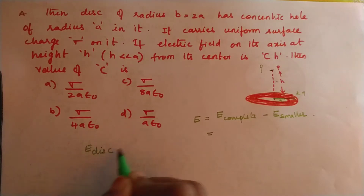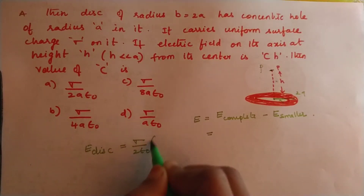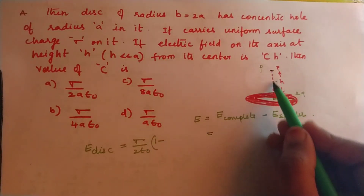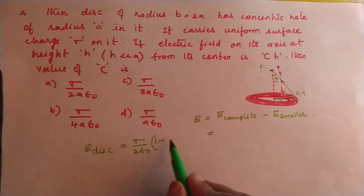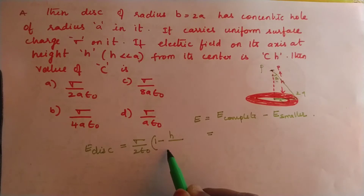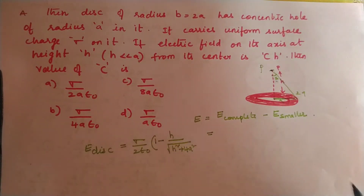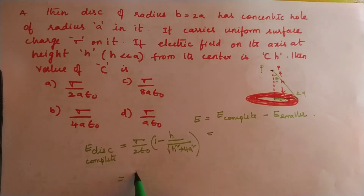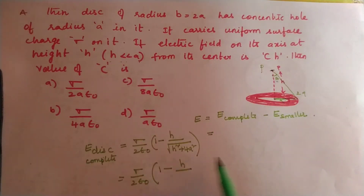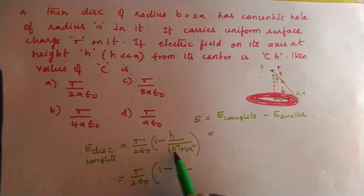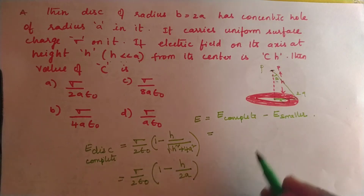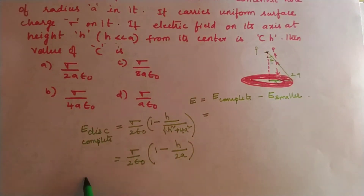For a disc, the electric field is E = sigma/(2ε₀) × (1 − cosθ), where cosθ = h/√(h² + R²). For the complete disc of radius 2a: E₁ = sigma/(2ε₀) × [1 − h/√(h² + 4a²)]. Since h << a, we neglect h² compared to 4a², giving E₁ ≈ sigma/(2ε₀) × (1 − h/2a). For the smaller disc of radius a: E₂ = sigma/(2ε₀) × (1 − h/√(h² + a²)) ≈ sigma/(2ε₀) × (1 − h/a).